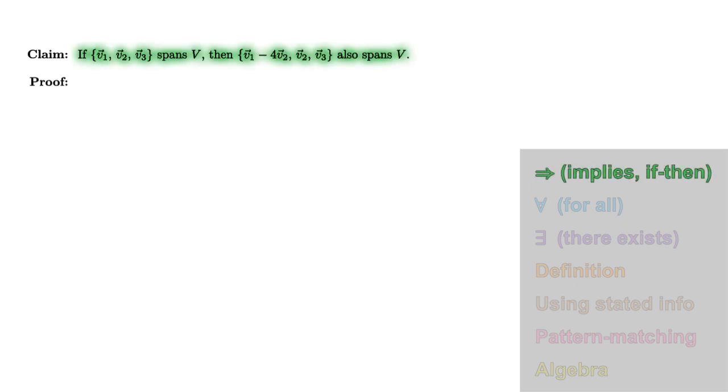The statement we're proving is an if-then or implies statement. To prove such a statement directly, we'll suppose the hypothesis in our proof, and we'll need to deduce the conclusion, giving us a new target.